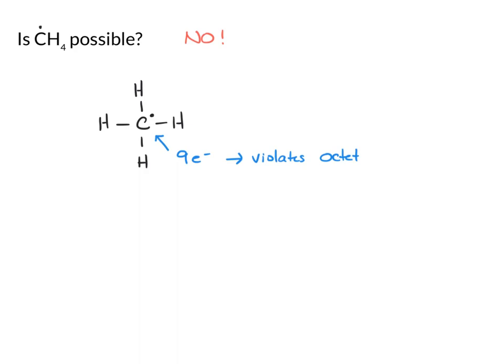Now the methyl radical, which is just CH3 with a radical, that's the one we just looked at, and that is allowed, because that doesn't go over carbon's octet. It is electron deficient. It only has seven electrons.